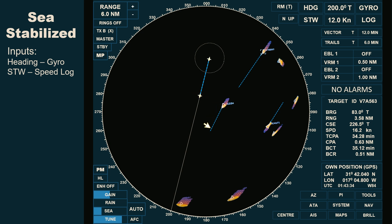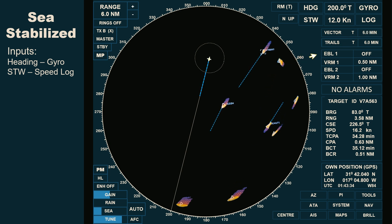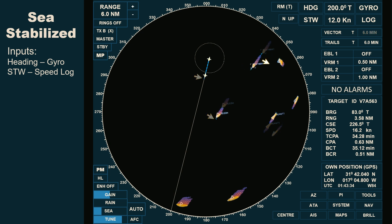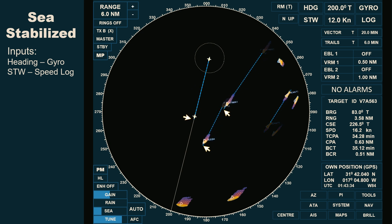This target's position will also be at the end of its present vector after 12 minutes, as with all other targets. If the vector is set to 6 minutes, the displayed vector on the radar screen will become shorter, and own ship's position — as with other targets — will be at the end of their respective vector after 6 minutes. If we set it to 20 minutes, the displayed vector becomes longer, and the position of own ship and other targets will be at the end of their present vector after 20 minutes.